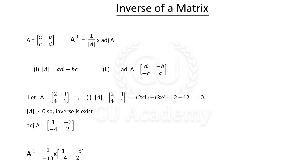The inverse is simple — use the determinant and the adjoint. A inverse is equal to 1 by minus 10 into the adjoint matrix. The adjoint (RGA) is equal to: 1, minus 3, minus 4, 2. That's all.